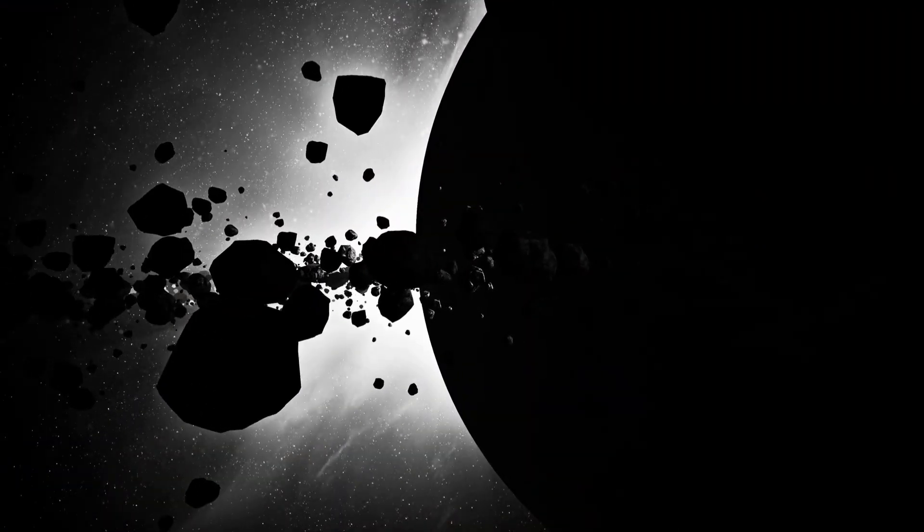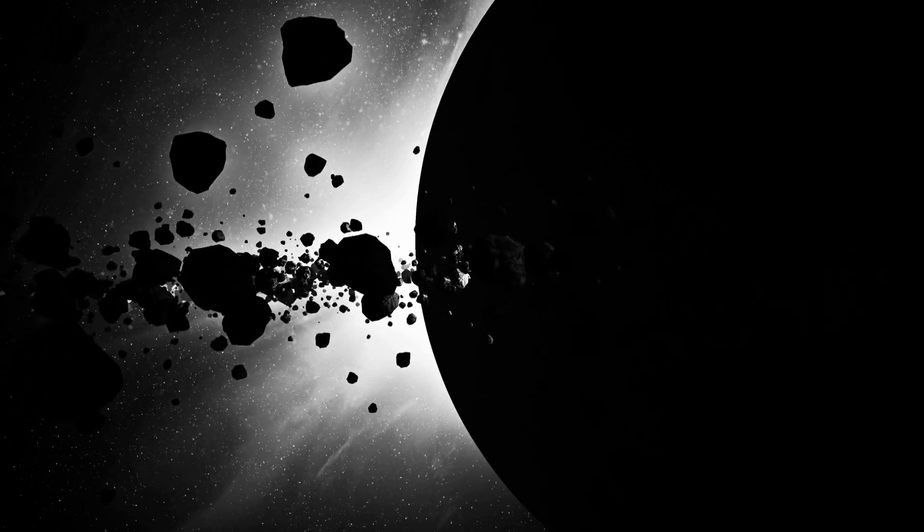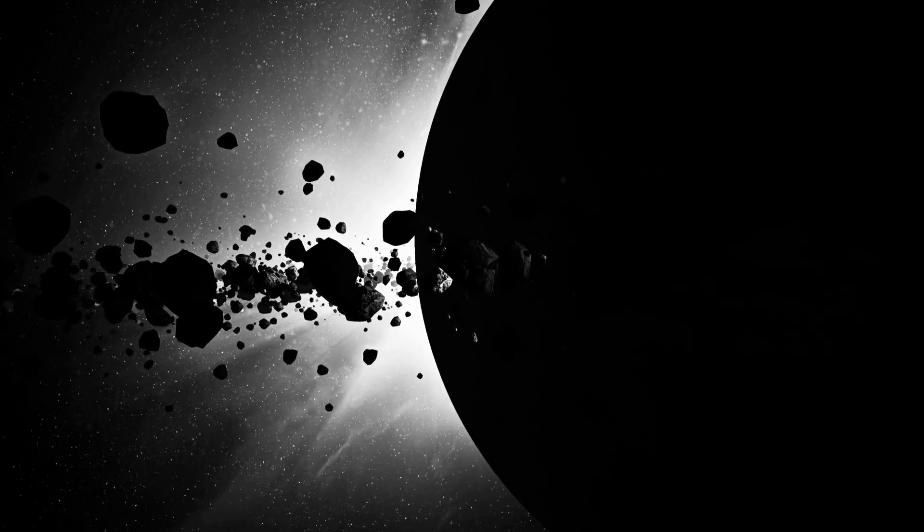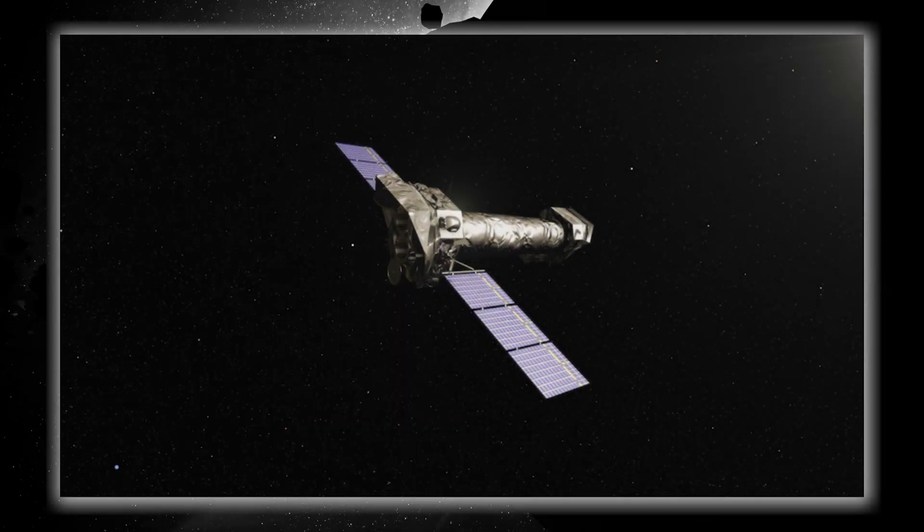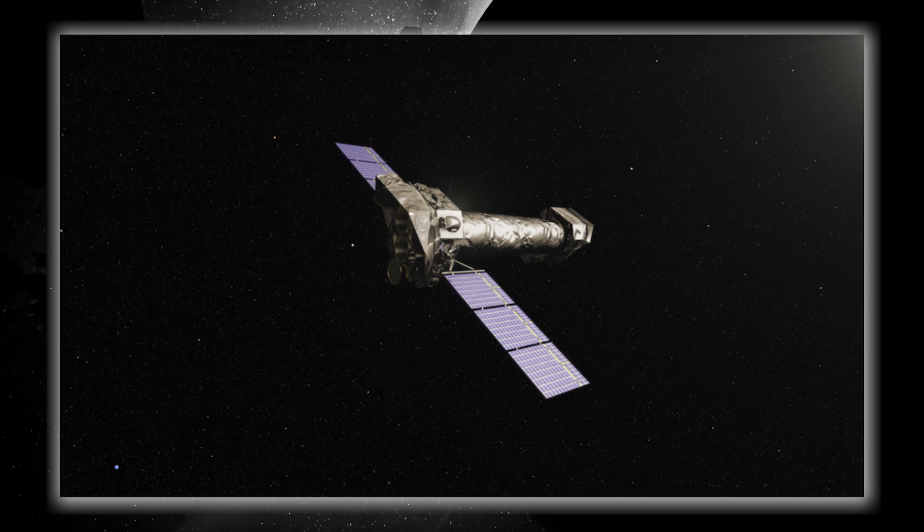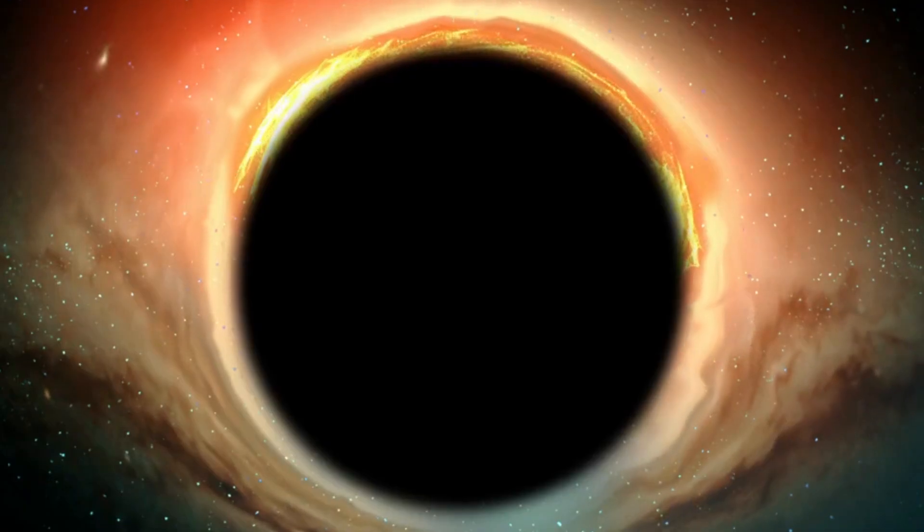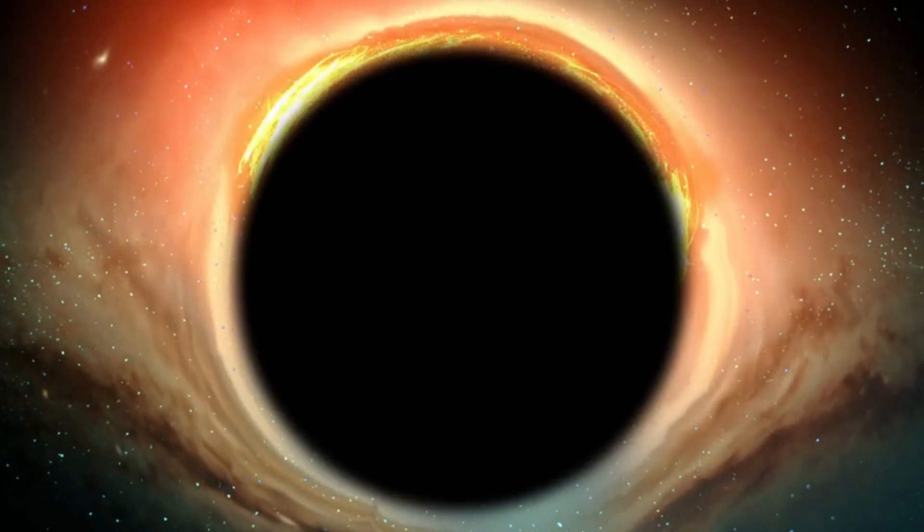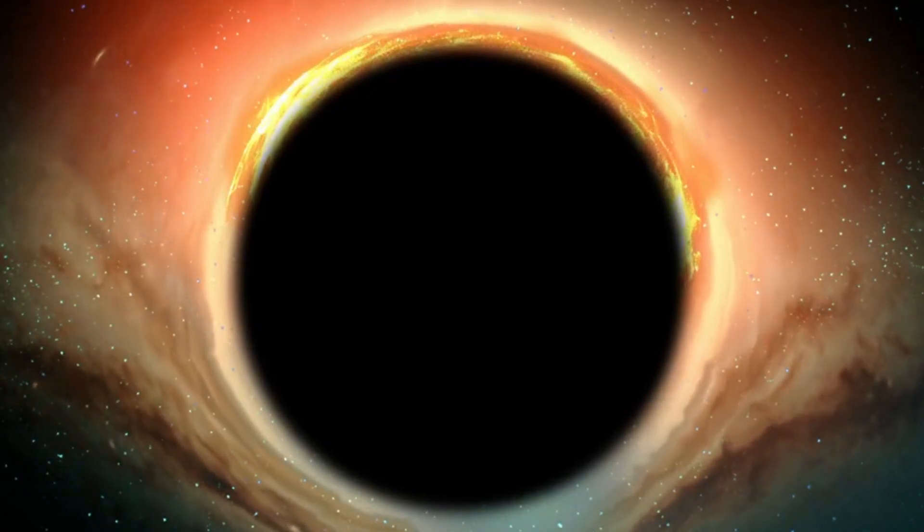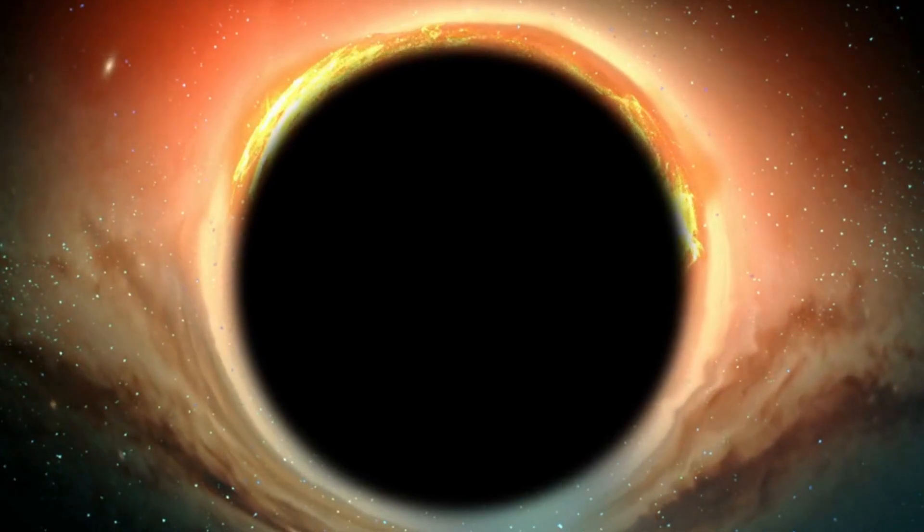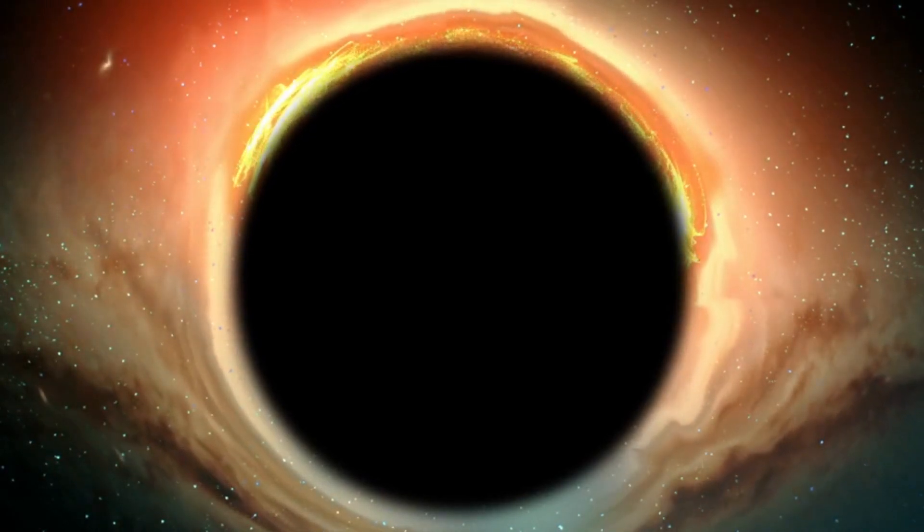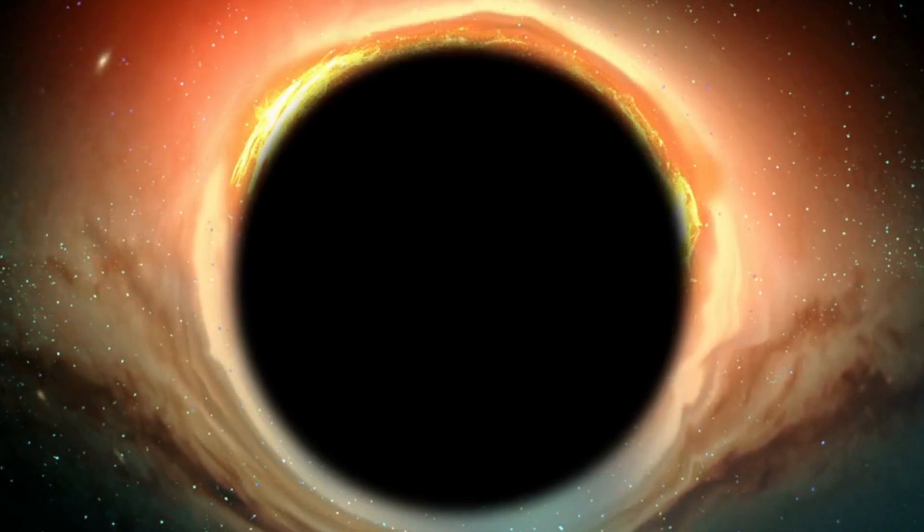But how did this revolutionary discovery come about? The story centers on two impressive space telescopes, the XMM-Newton, operated by the European Space Agency, the James Webb Telescope, and NuSTAR, operated by NASA. These telescopes were focused on a supermassive black hole and witnessed quite a show over several days. They observed fascinating X-ray flares emitted by the scorching hot corona surrounding the black hole.